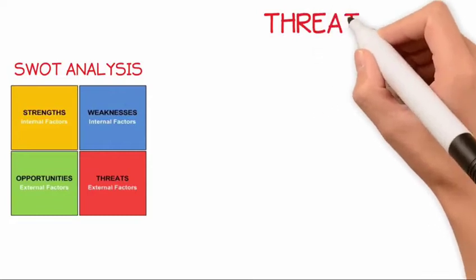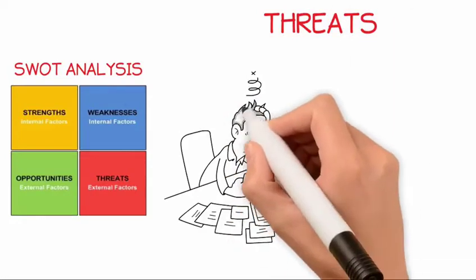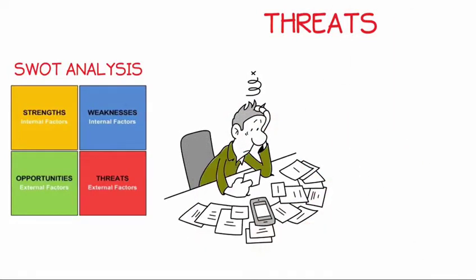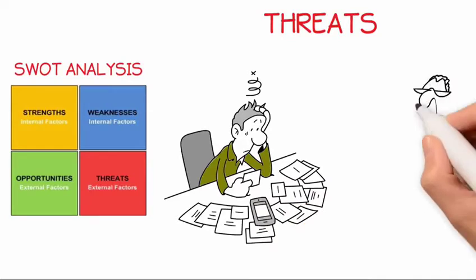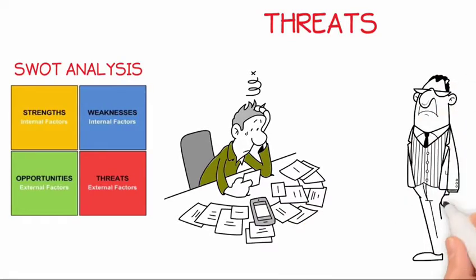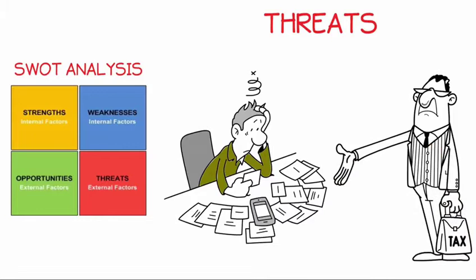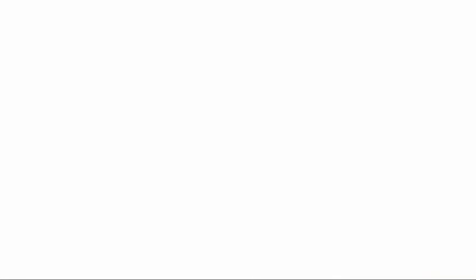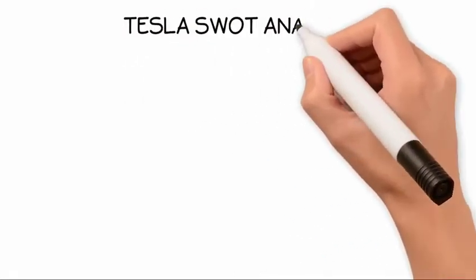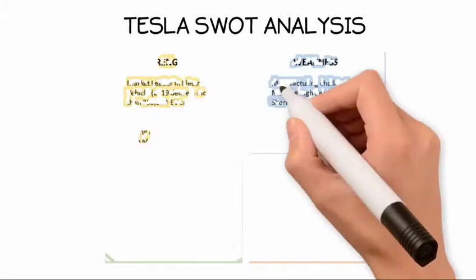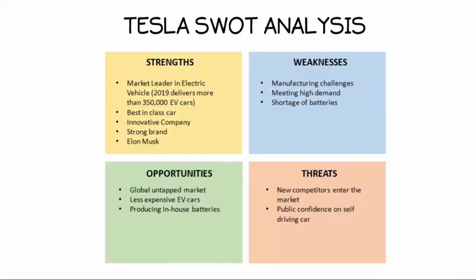Threats include anything that can negatively affect your business from the outside. Examples could be disruption in the supply chain, changes in government policies and market requirements, or a shortage of recruits. Let us do a SWOT analysis for Tesla. Tesla is the market leader of electric vehicles.